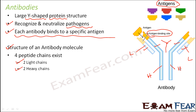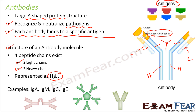An antibody molecule is represented as H2L2 — that means two heavy chains and two light chains. This representation keeps things simple so that every time you do not have to draw the structure. Whenever you say H2L2, that means it is a Y-shaped protein structure, which is the antibody. There are various types of antibodies because one antibody cannot bind to all antigens.